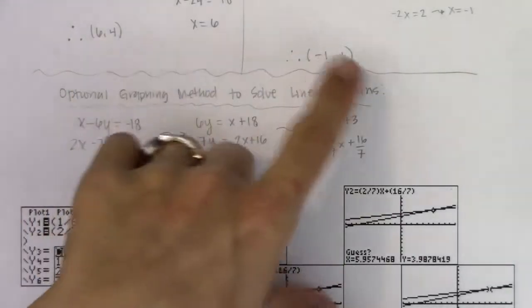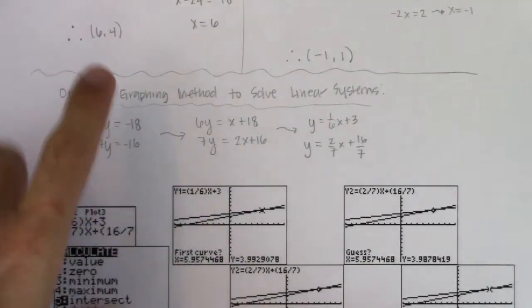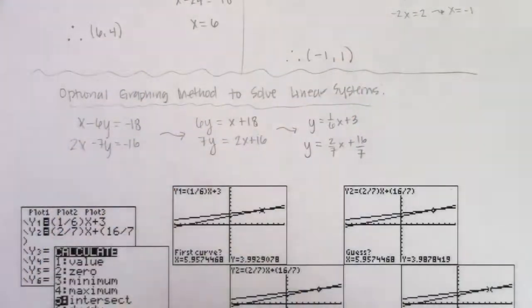And that is the most common option. Most of the time when you solve a system of equations, you get an ordered pair. There are two exceptions to that rule. And we're going to take a look at those two exceptions in the next example. Alright, I'll see you in a bit. Bye.